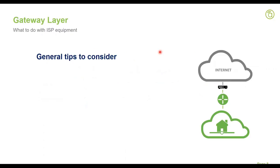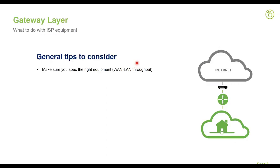Now the gateway layer — the router. The router connects the internal network with the internet. Your router gets one IP address from the ISP and is responsible for all address translation from inside to outside the network. When thinking about the gateway layer, make sure you spec the right equipment. Look at the WAN to LAN throughput. Our current 300 series router is capable of doing up to 500 megabit per second WAN to LAN.